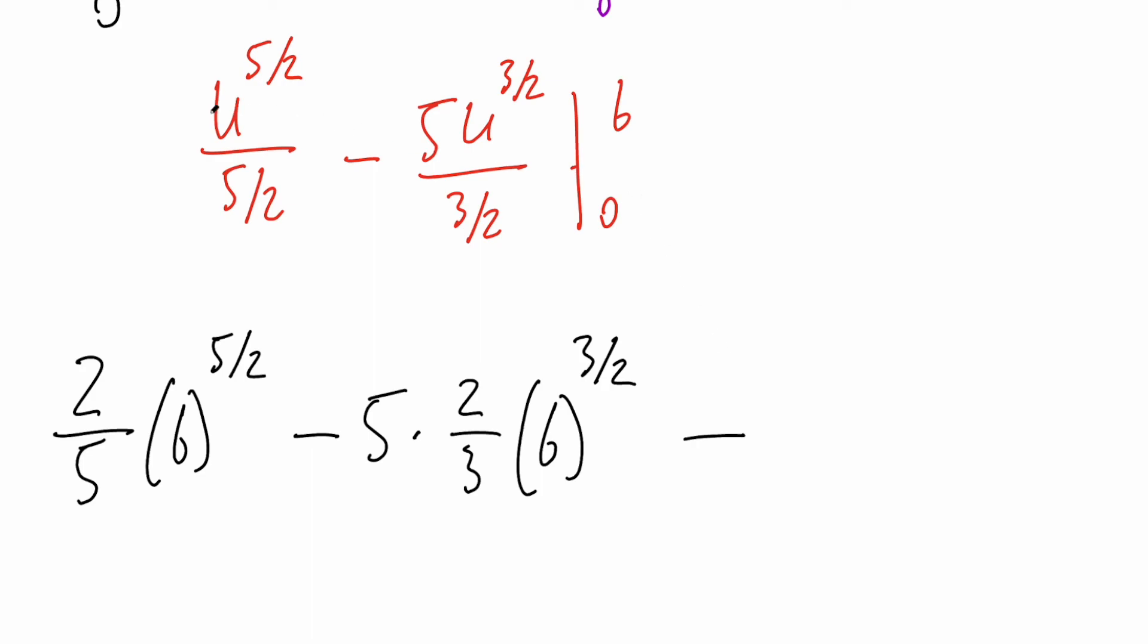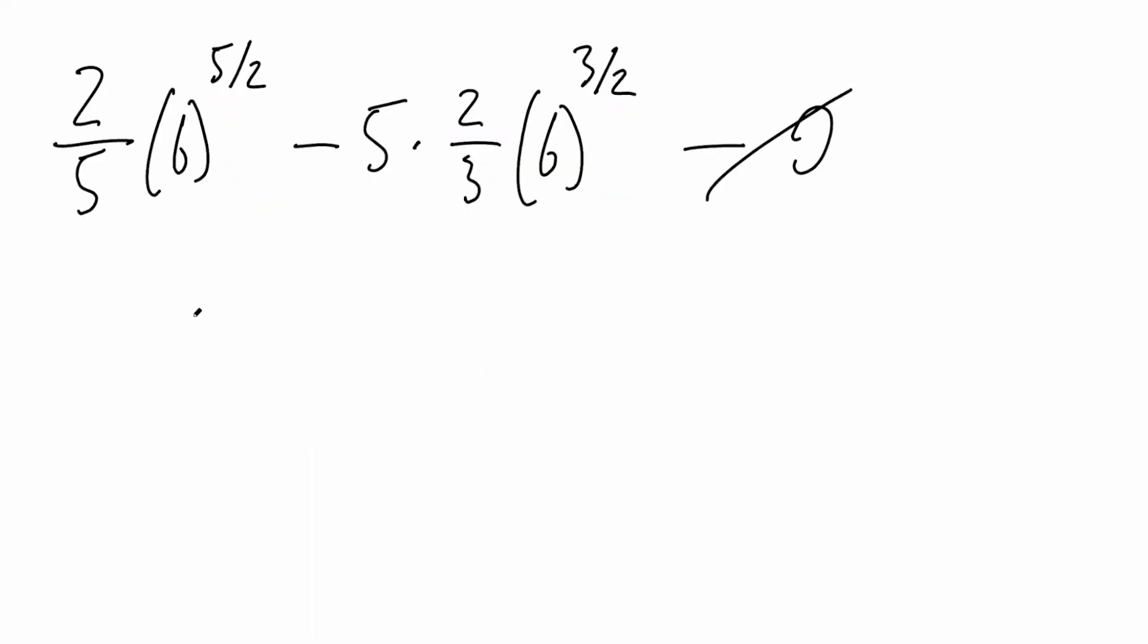If you plug in zero for both, you're still going to get zero, so minus zero, which doesn't matter. We can do one more step to clean up. Instead of saying -5×(2/3), you could say -10/3. So our final answer will be this, and that's all we need to do for this problem.